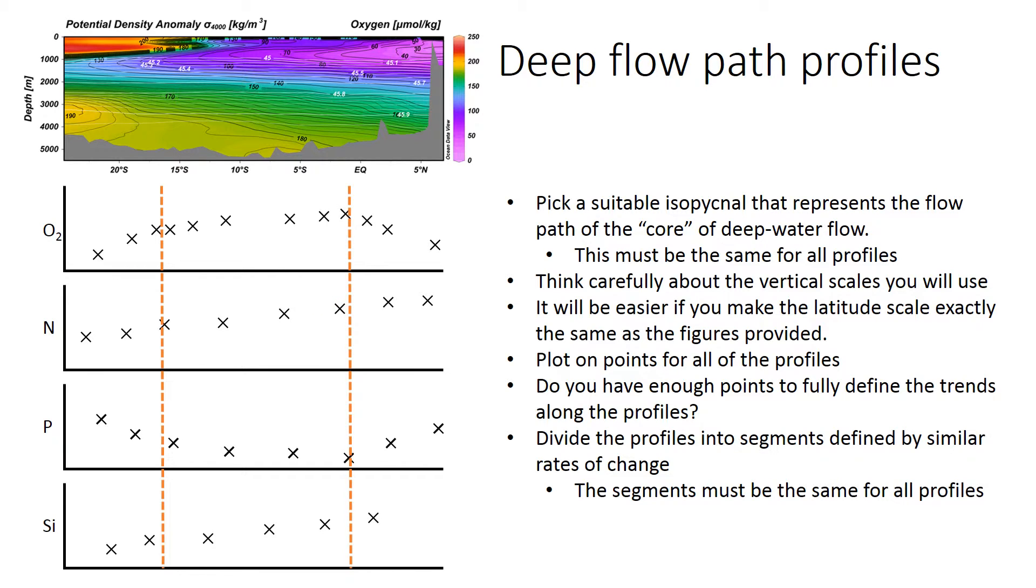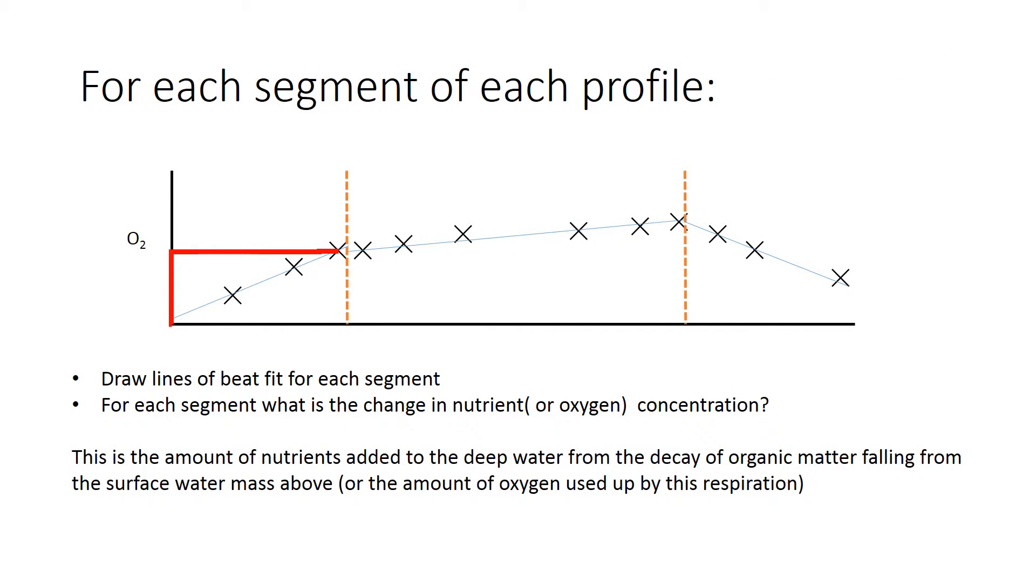For each segment, we want to work out what the change of each of the nutrients is. You draw a best fit line through the data for that segment—segments don't have to match up exactly. Then read off how much the oxygen concentration or nutrient concentration changes for that segment. What we're wanting to work out is the gradient, which is the change over the distance. But because later we're going to be working out ratios of gradients, the distance over which the concentration changes will be the same for each parameter within each segment, so that will cancel out. You just need to know the amount of change in oxygen and the amount of change in the nutrients.